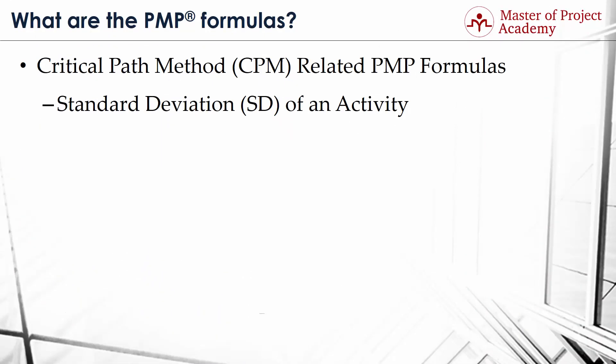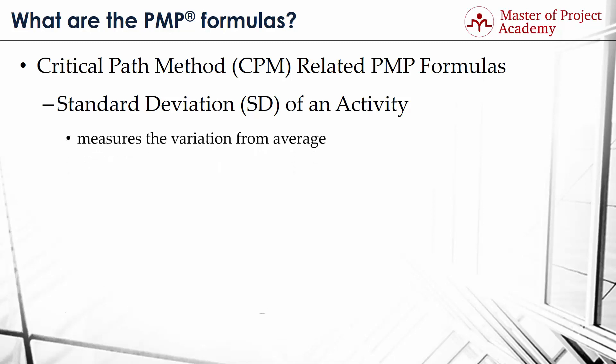Standard Deviation or SD of an Activity measures the variation from average. A low value of SD indicates that the data points are close to the average. On the other hand, a high value of SD indicates the spread of data points over a large range. Accordingly, the formula for Standard Deviation is as follows: SD equals P minus O, the result of which is then divided by 6.